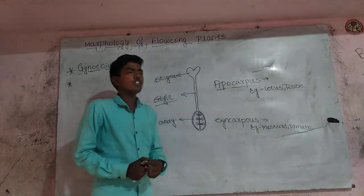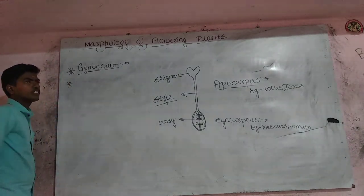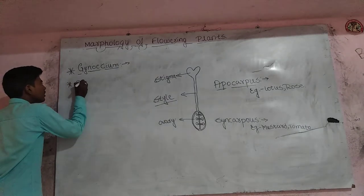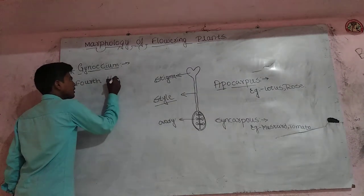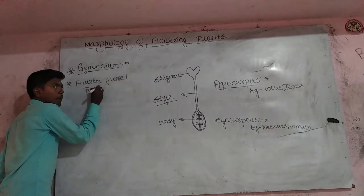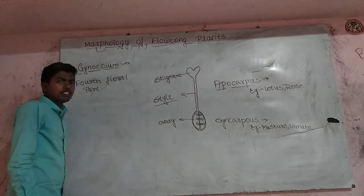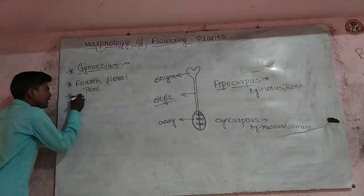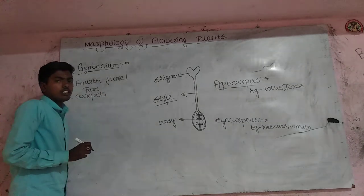In this video, I am going to start with the Gynoecium. Gynoecium is the fourth floral part. Members of the Gynoecium are called Carpels.